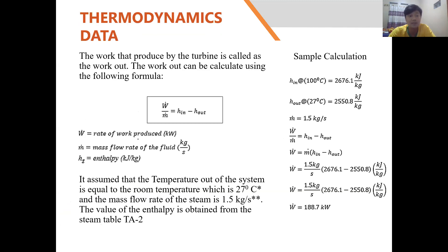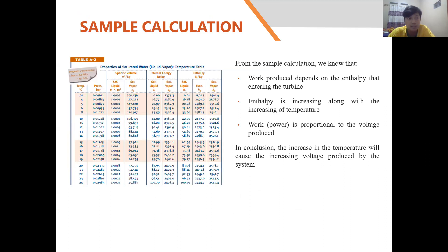It is assumed that the temperature out of the system equals room temperature at 27°C, and the mass flow rate of steam is 1.5 kg/s. The enthalpy values are obtained from steam table A-2. From the sample calculation, the turbine work is equal to 188.7 kW. The results show that work produced depends on the enthalpy entering the turbine, enthalpy increases with temperature, and work or power is proportional to the voltage produced.